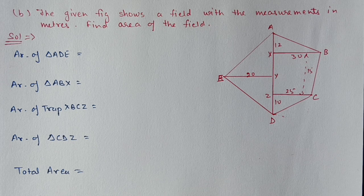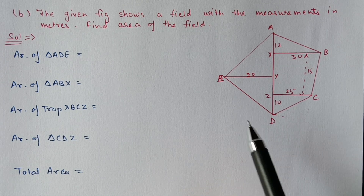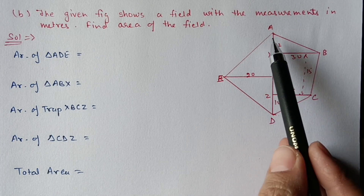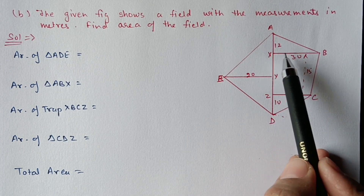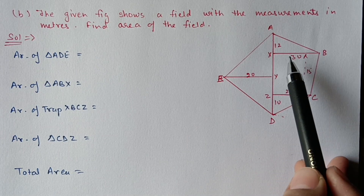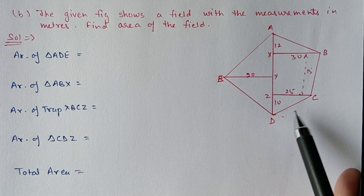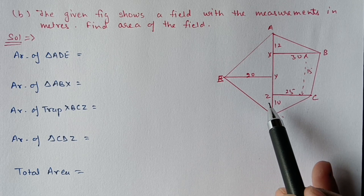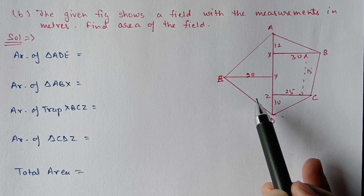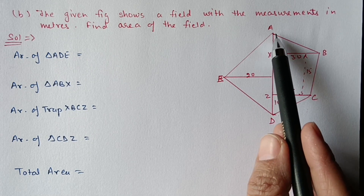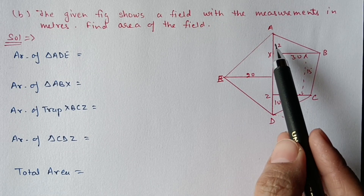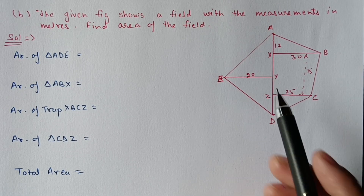Next, question 44 part b. The given figure shows a field with measurements in meters. Find the area of the field. This field will be divided into four parts: one triangle ADE, another triangle ABX, one trapezium, and one more triangle. We will find their areas separately and then add.